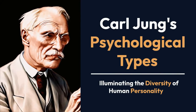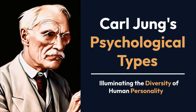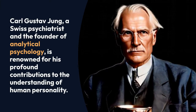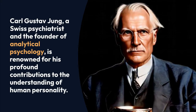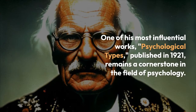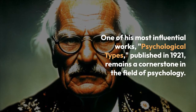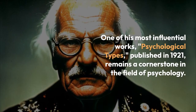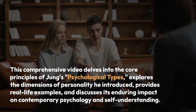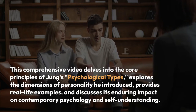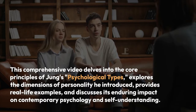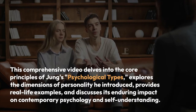Carl Jung's Psychological Types: Illuminating the Diversity of Human Personality. Carl Gustav Jung, a Swiss psychiatrist and the founder of analytical psychology, is renowned for his profound contributions to the understanding of human personality. One of his most influential works, Psychological Types, published in 1921, remains a cornerstone in the field of psychology. This video delves into the core principles of Jung's psychological types, explores the dimensions of personality he introduced, provides real-life examples, and discusses its enduring impact on contemporary psychology and self-understanding.